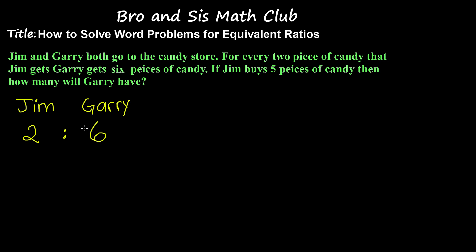Now let's read the question again. It says if Jim buys five pieces of candy, then how many will Gary have? So we don't know how many pieces of candy that Gary has now, but we do know how many pieces of candy Jim has.